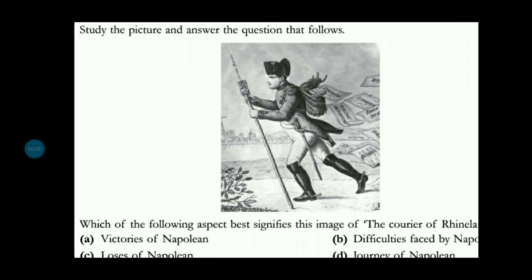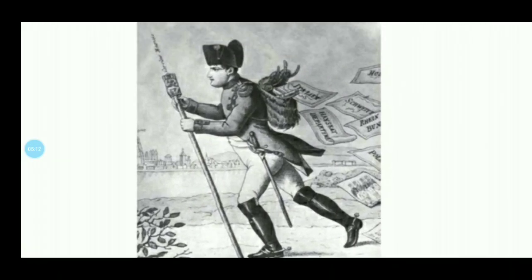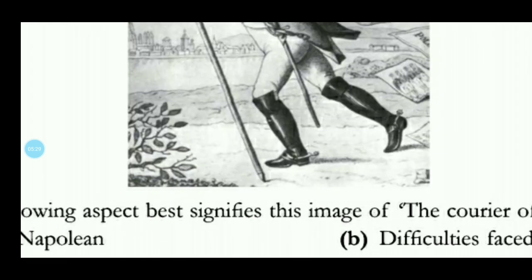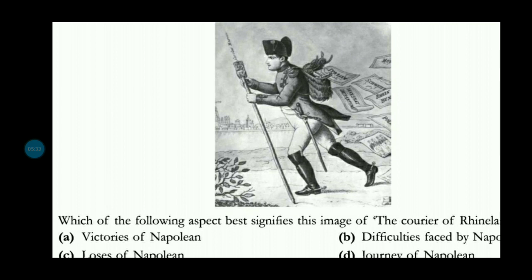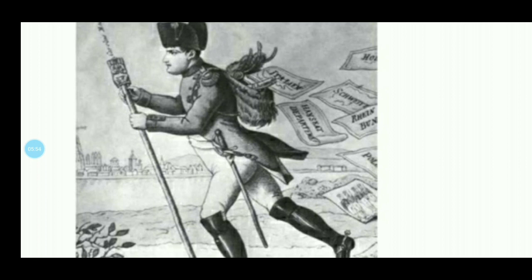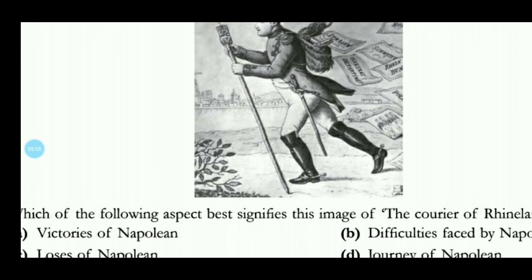This is a very important image. A postman is personified as Napoleon, and letters are falling down. The question relates to 'The Courier of the Rhineland.' The options are victories of Napoleon, difficulties faced by Napoleon, losses of Napoleon, and last journey of Napoleon. The letters represent territories that are falling and being lost. The most specific and correct answer is losses of Napoleon.